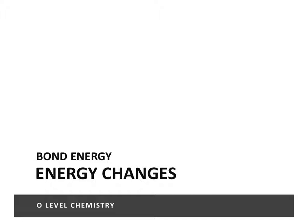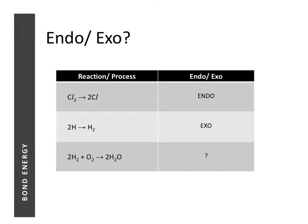In the last video we looked at what is endothermic and exothermic, and we looked at some common examples of reactions and processes that are endo and exo. In this video we're going to look at more reactions. Quick recap: we have seen reactions 1 and 2, and learned that if a reaction involves only bond breaking then it's endothermic, and if it involves only bond forming then it's exothermic.